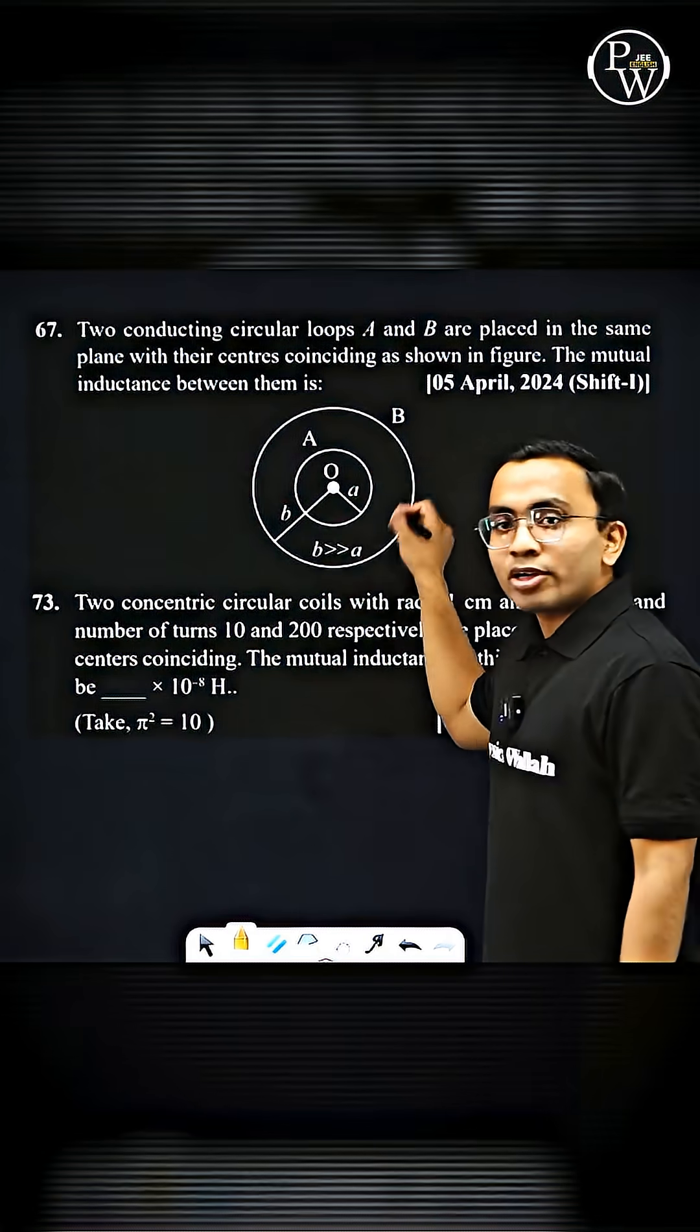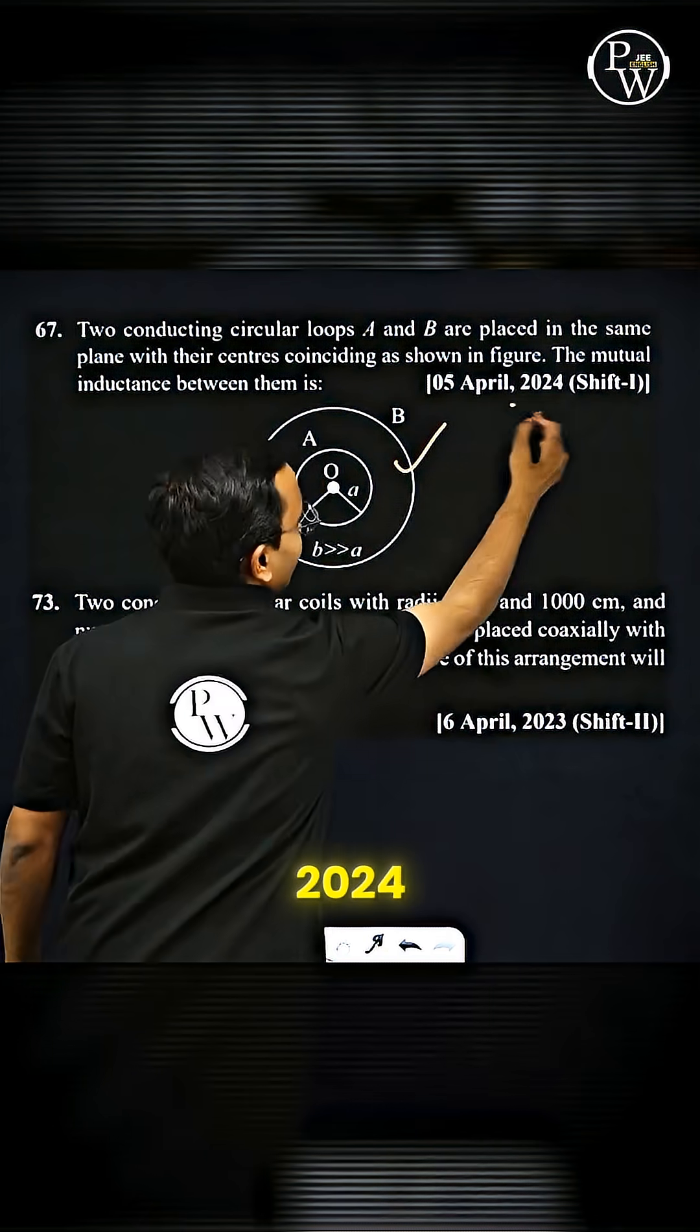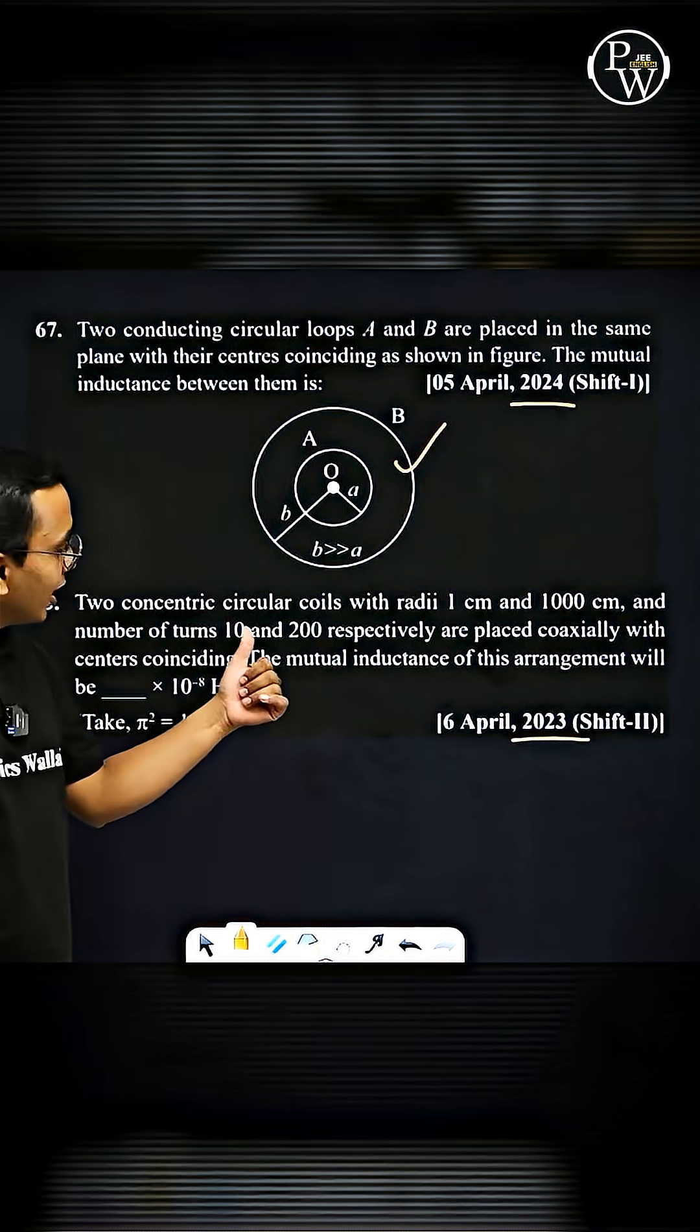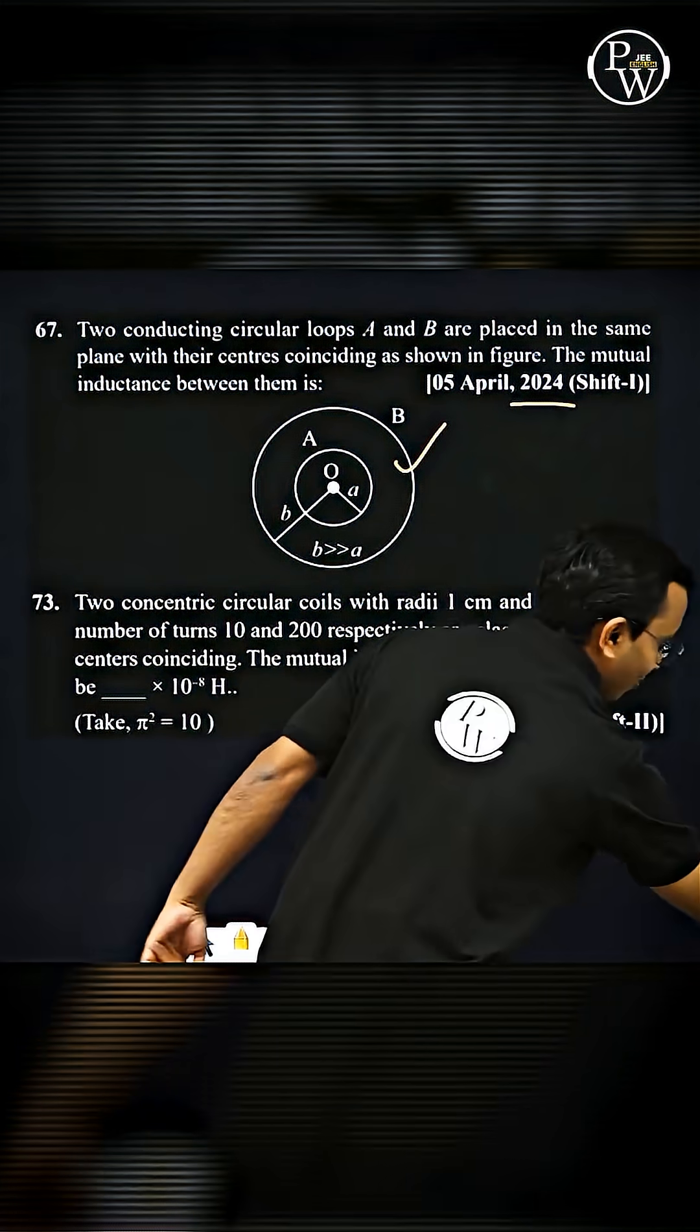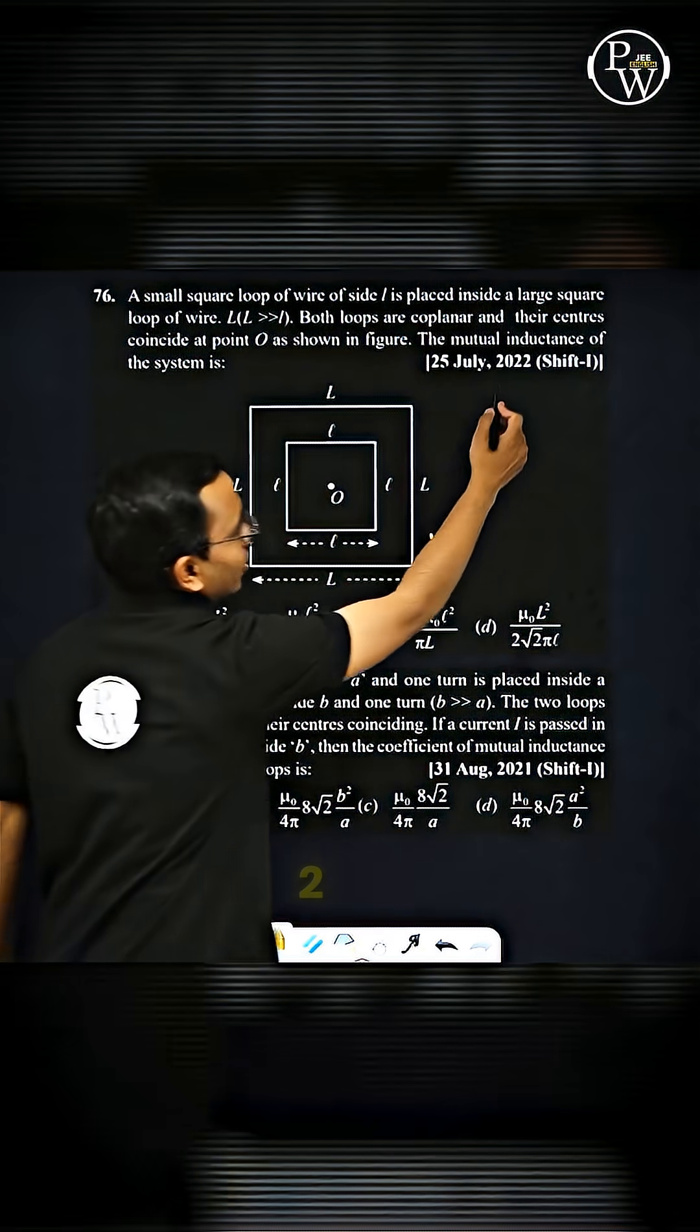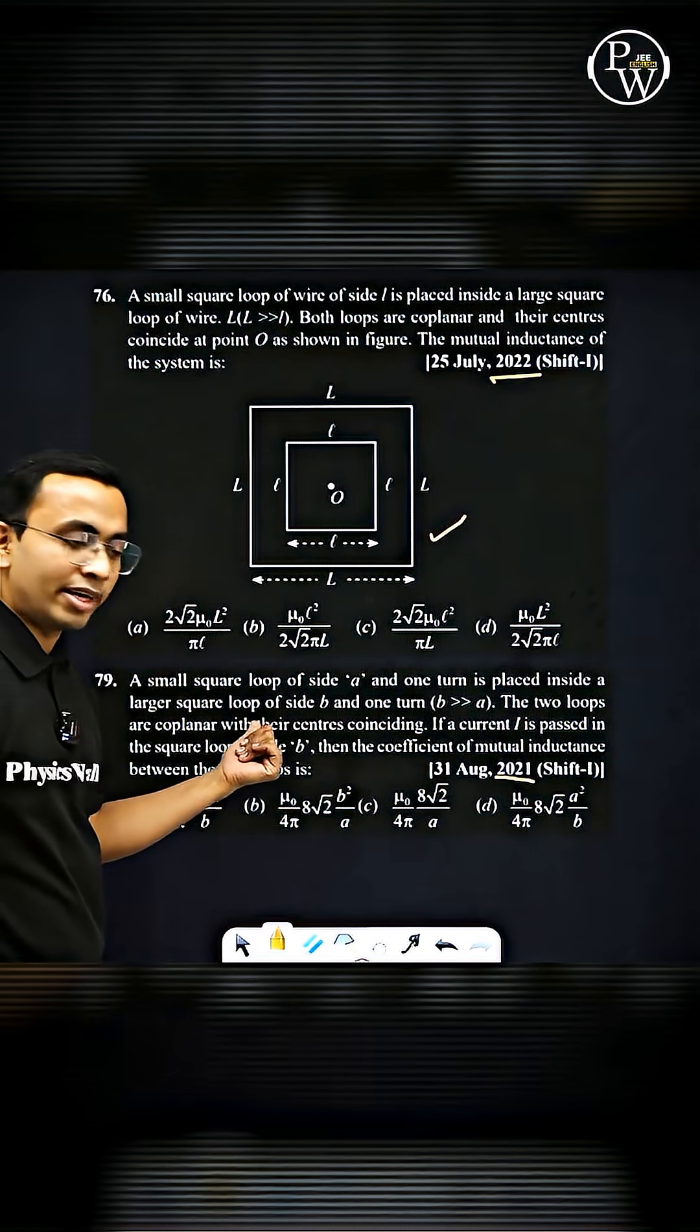Another example: two circular coils, find their mutual inductance. These are concentric. This was 2024. 2023: two circular coils concentric, find the mutual inductance. Another example: two square loops concentric, find the mutual inductance. This was 2022. Now 2021: two square loops again, find the mutual inductance.